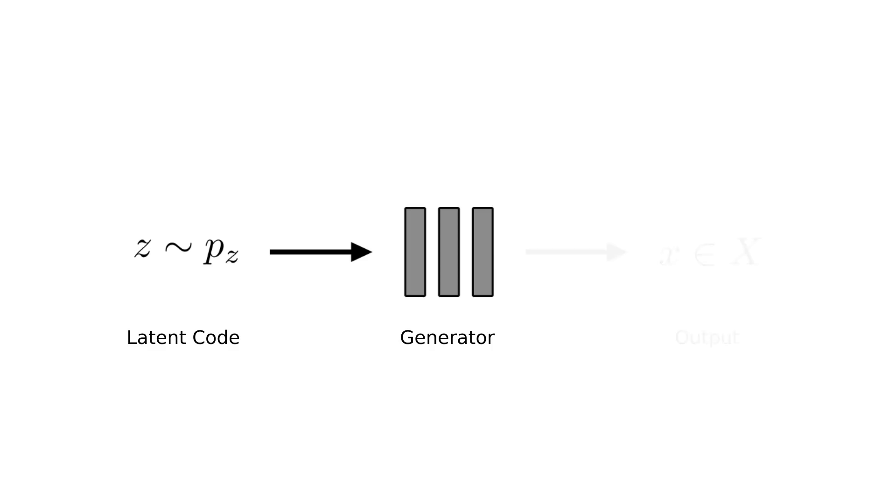Generative models are great. In the typical setup, at test time we can sample a latent code z from our prior distribution pz, pass this to our trained generator, and then we get out a new output x in some domain x.